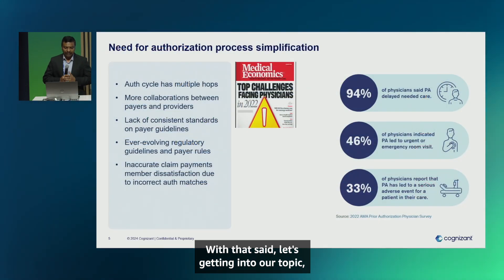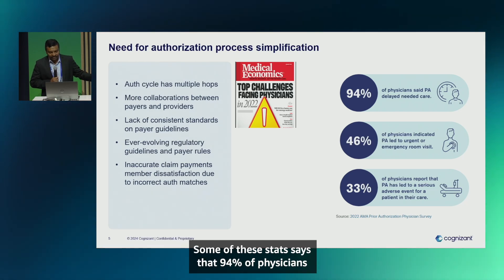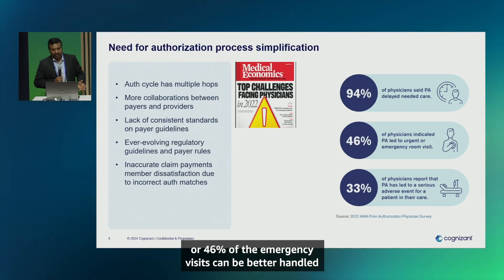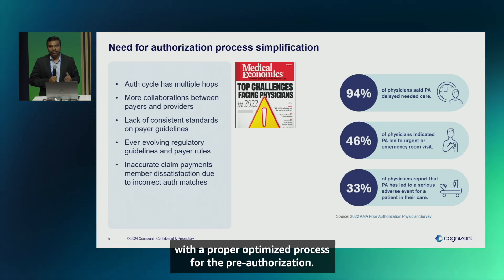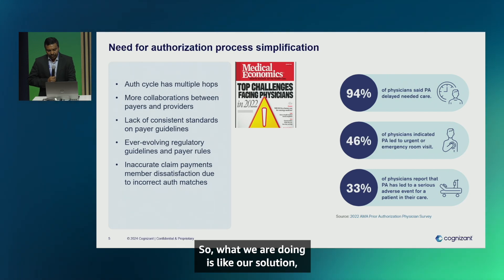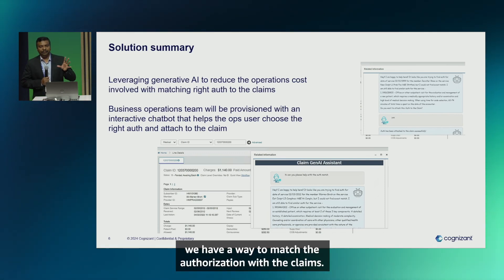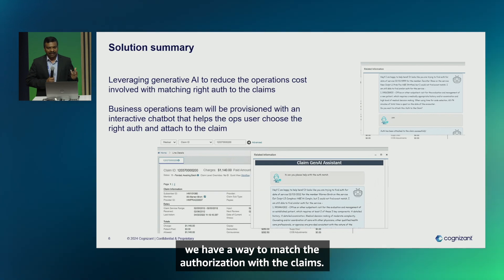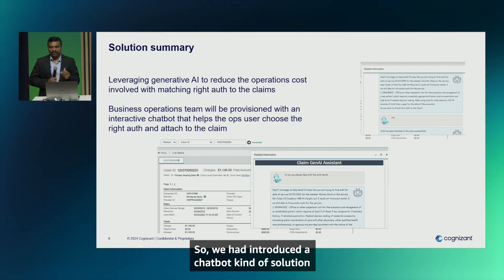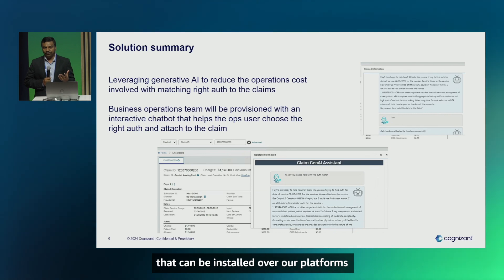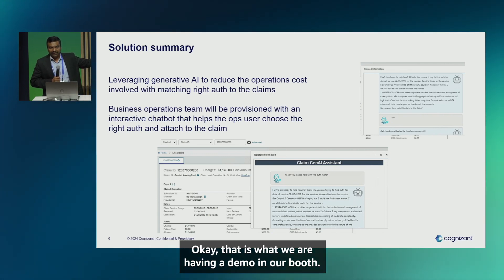The need for pre-authorization process: some stats say that 94% of physicians say pre-authorization needs to be optimized, and 46% of emergency visits can be better handled with a proper optimized pre-authorization process. What we are bringing into the solution is a way to match the authorization with the claims — that is one of the biggest problems for payers. We introduced a chatbot-kind of solution that can be installed over our platforms to optimize your claim-to-authorization match, and we are having a demo in our booth.